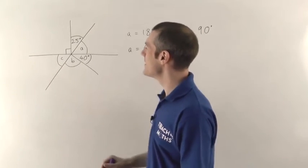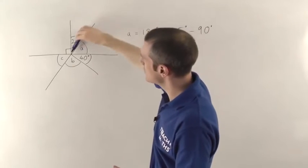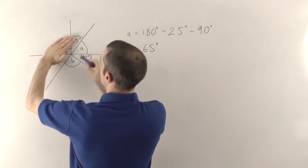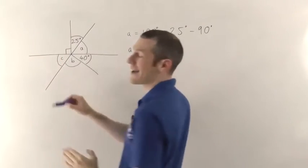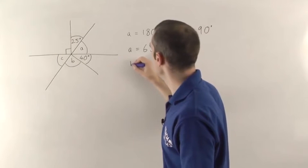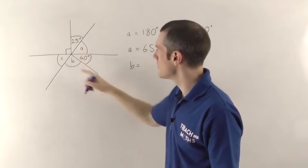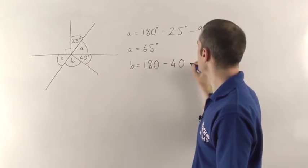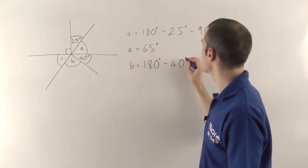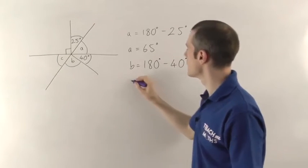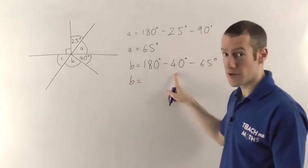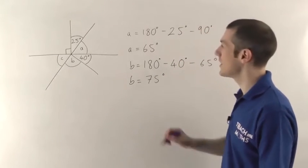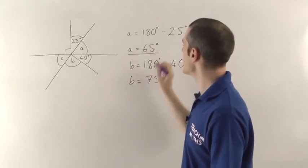Now B or C. I would use this straight line next — and sometimes it's quite hard to see those straight lines. But if you cover up part of the diagram, you can see the straight line there. So A plus 40 plus B has to add up to 180 degrees. So B is 180 minus 40 minus 65, which gives you 75 degrees.